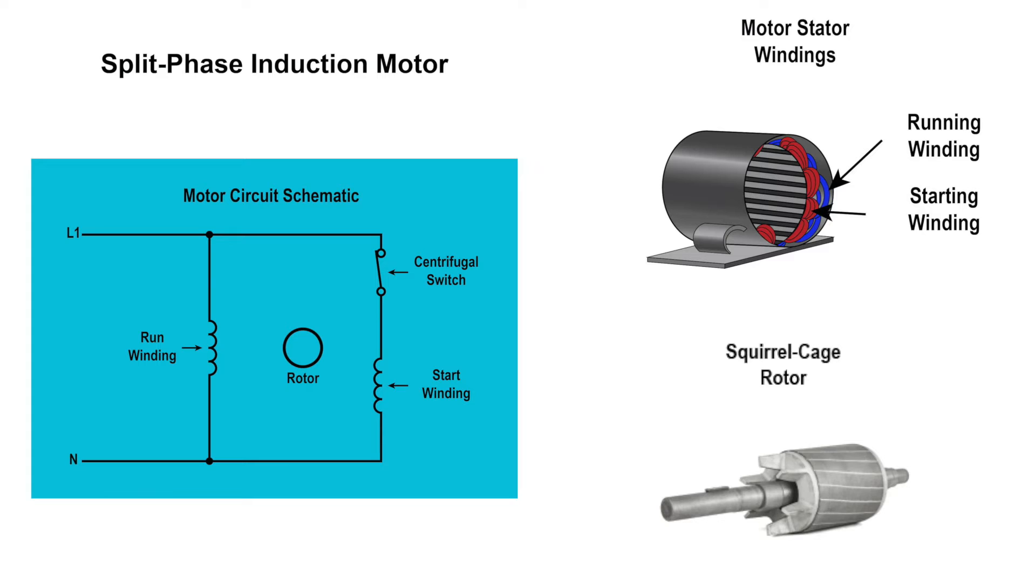The start winding produces a phase difference to start the motor, and when the motor reaches about 75% of its full-rated full-load speed, the start winding is disconnected from the circuit by either a centrifugal switch or electronic solid state switch.